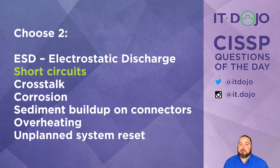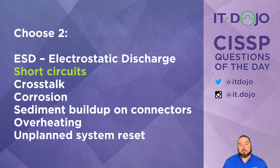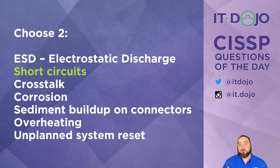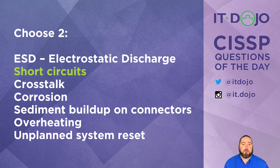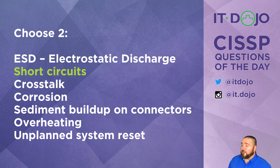Next item on the list is crosstalk. No — crosstalk is when you have interference or information moving from one data pathway to another, causing disruption or introduction of errors into your signal transmission, particularly in copper-based communications. That is not something we worry about as far as humidity is concerned.